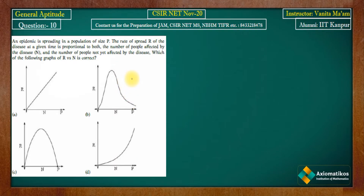Hello everyone, welcome to the solution series for CSIR NET November 2020. This is question 10 from General Aptitude. An epidemic is spreading in a population of size p. The rate of spread r of the disease at a given time is proportional to both the number of people affected by the disease and the number of people not yet affected. Which of the following graphs of r versus n is correct?